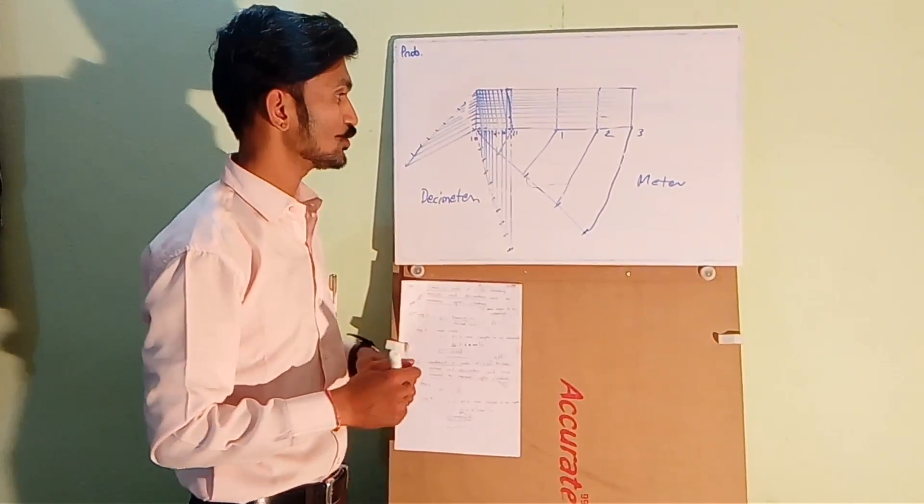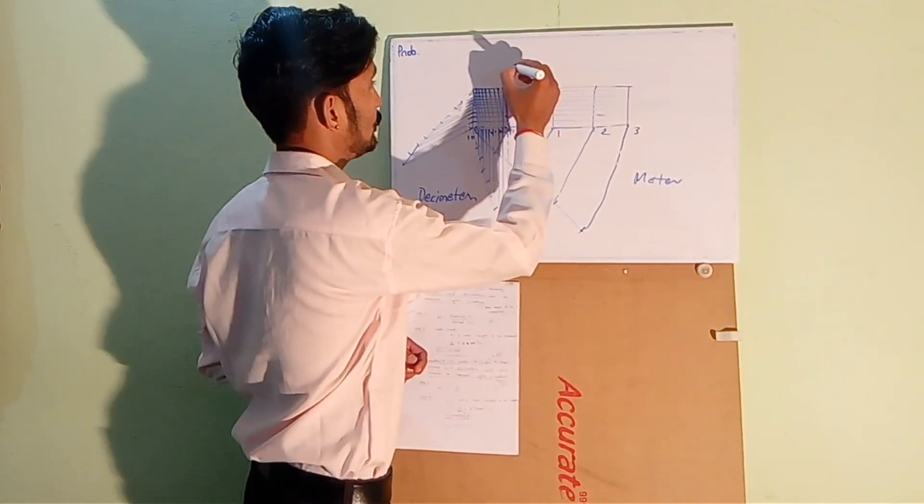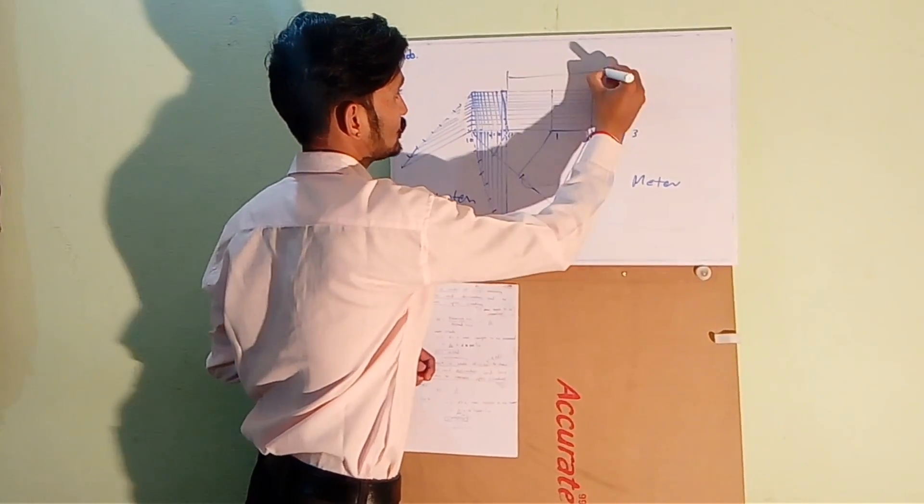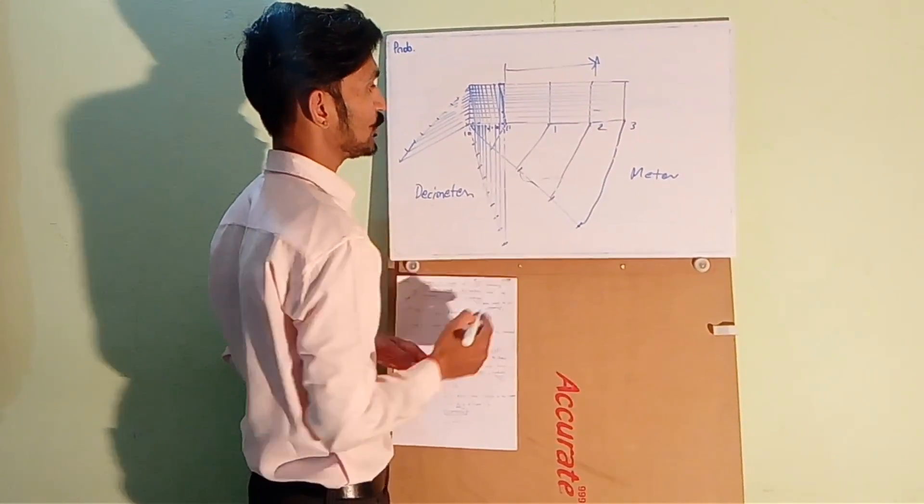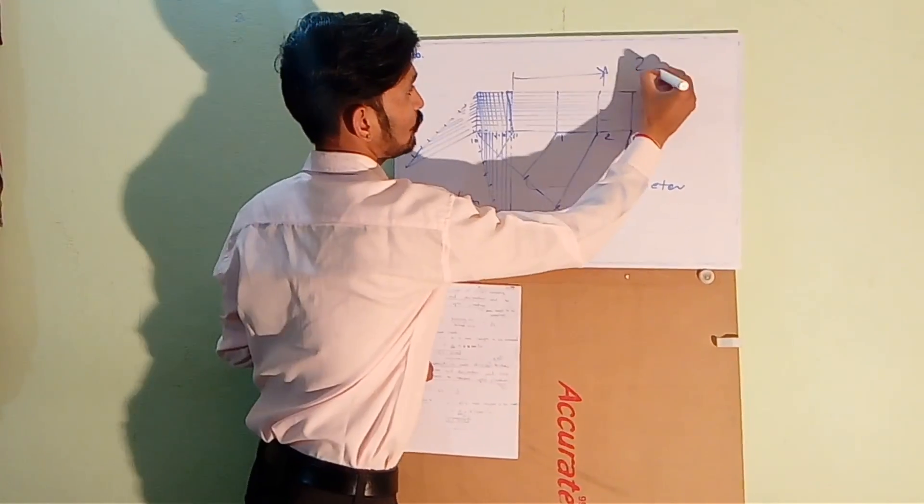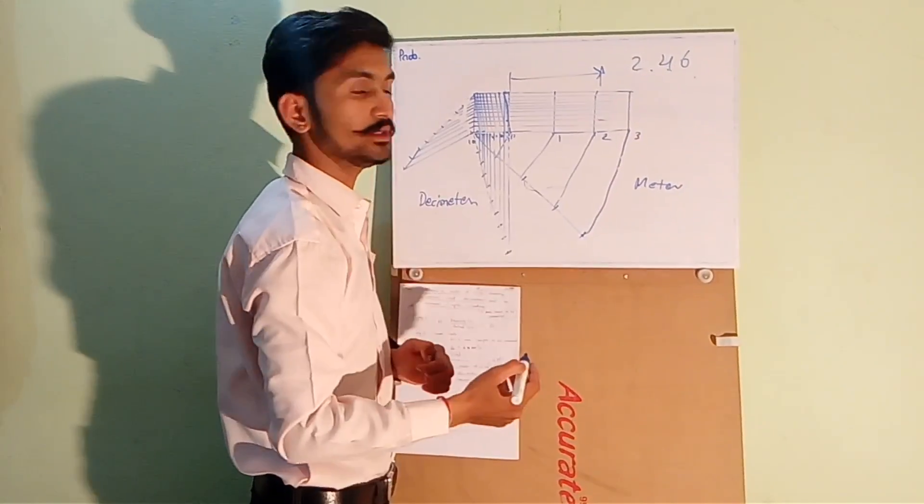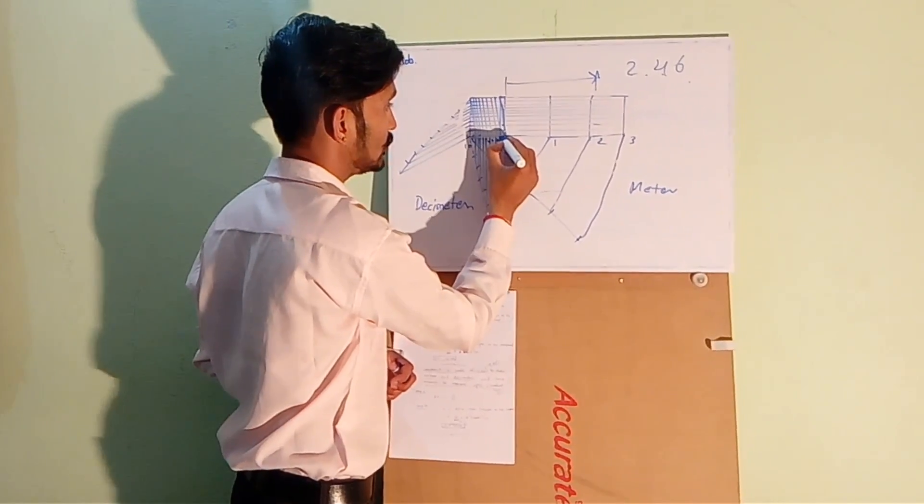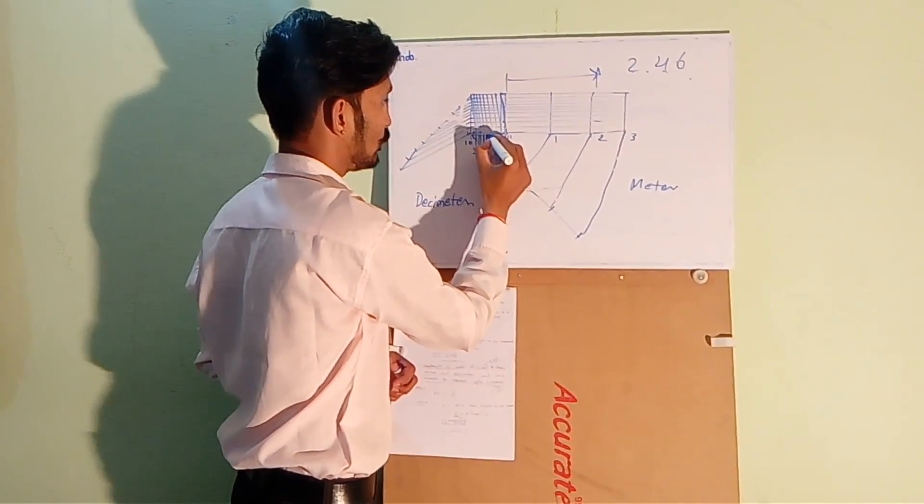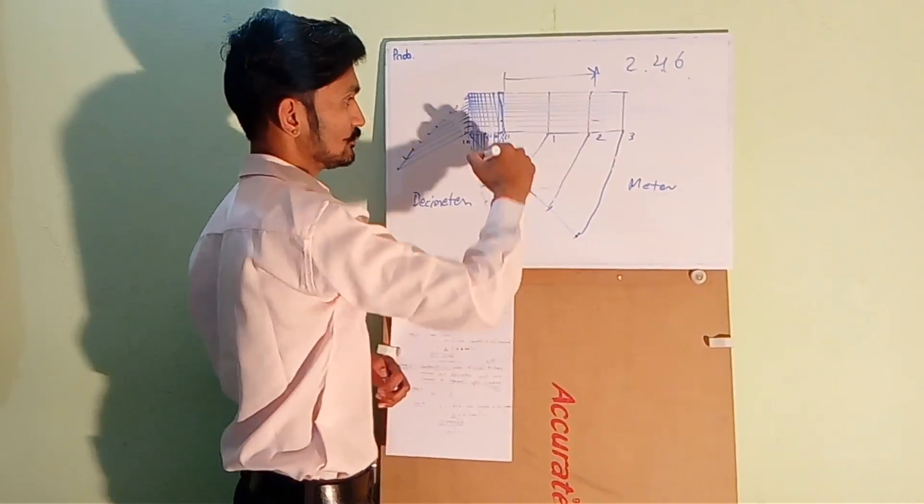Now we need to show 2.46 meters as asked in the question. So to show 2.46 meters, what we will do? We will take 2 meters from here. So this is 2 meters. 2.46 means 2 meters, 4 decimeters and 6 centimeters. So 2 meters, 4 decimeters. So count 1, 2, 3, 4. 4 from here and 6 from here.